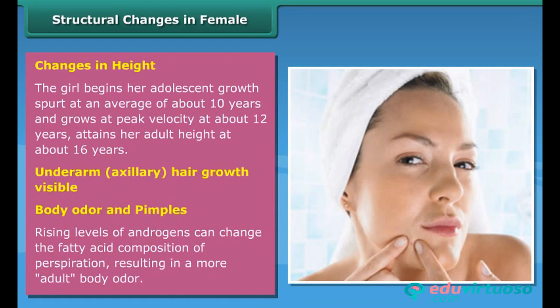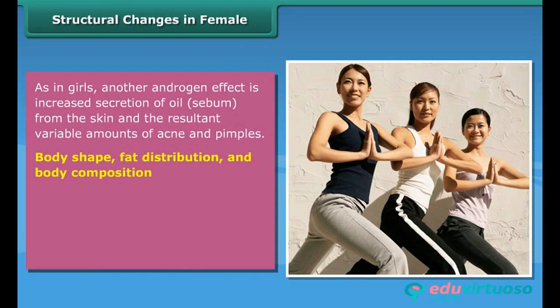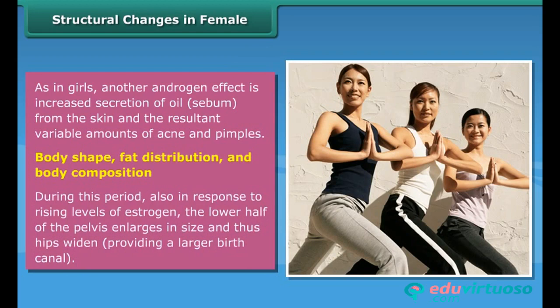Rising levels of androgens can change the fatty acid composition of perspiration, resulting in a more adult body odor. Another androgen effect is increased secretion of oil (sebum) from the skin, resulting in variable amounts of acne and pimples. During this period, in response to rising levels of estrogen, the lower half of the pelvis enlarges, and hips widen, providing a larger birth canal.